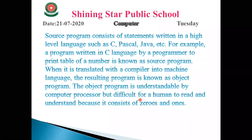Another example: if we write a program to print the table of a given number in C language, that is called the source program. When a compiler compiles the source program and converts it into the object program, there are specific file extensions used for the source program and object program, which we will discuss further.